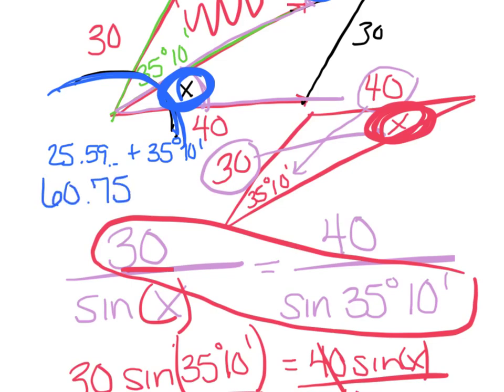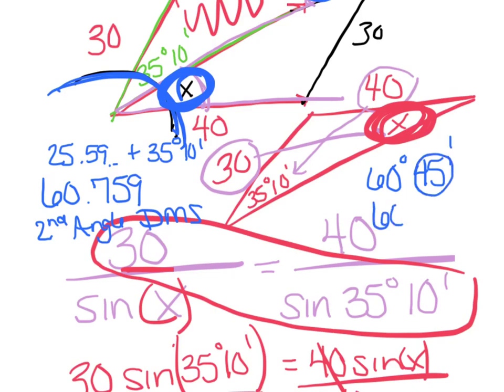So again, you're hitting second angle DMS for degrees, minutes, seconds. And that leaves me with, it's getting a little sloppy. I'm going to write on my right here, 60 degrees, 45 minutes. And they said round this to the nearest 10 minutes. Well, that means 45 is going to round up, the next 10 minute mark would be 50 minutes. And there you have it. We've got our final answer. We've got that whole angle.